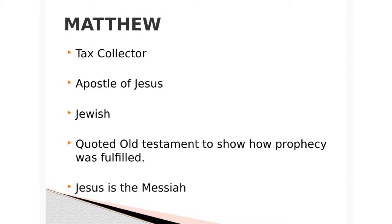Let's start with Matthew, the first Gospel in the New Testament. Matthew became an apostle of Jesus, but started out as a disreputable tax collector. He was a Jew, so his stories often quote the Old Testament to show how prophecy was fulfilled. Remember what you learned in our first lesson about the Old Testament concealing the New Testament, and the New Testament revealing the Old Testament. Jesus often used sentences from Old Testament Scripture to get the attention of his followers. They would have understood where these references came from, because the Jewish people following Jesus would have known the Torah by heart. He often answers questions with, 'It is written,' so his listeners would immediately know he was about to quote the Old Testament.